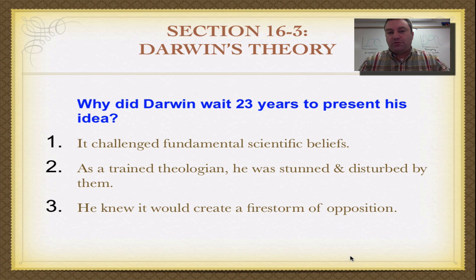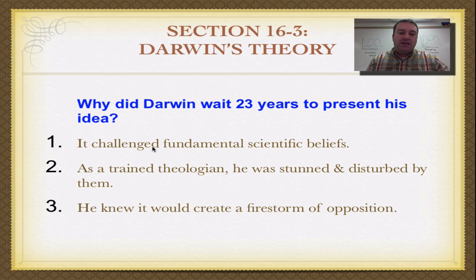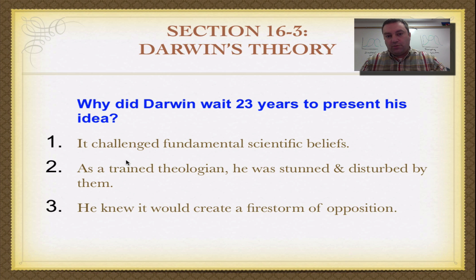Darwin, when he got back from his trip on the HMS Beagle, had this concept of evolution kind of floating in his head, and he was starting to write out his paper or book on that. But he kept it under wraps for 23 years before letting the world know of his great idea. Why did he wait so long? He knew it would challenge the fundamental scientific beliefs of the time. Bishop Usher had said the Earth was only 4,000 years old, and the common scientific belief was that God created all creatures exactly the way they are now.